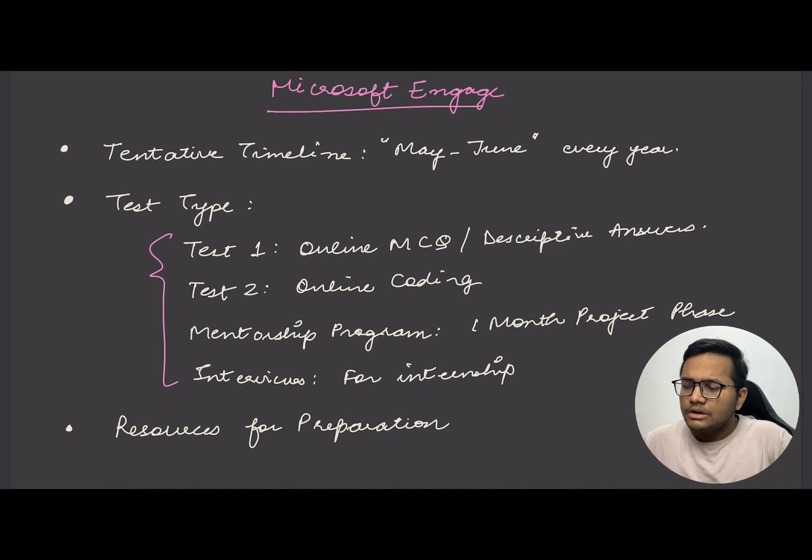Now we'll discuss the entire process in detail. The tentative timeline for Microsoft Engage is May or June every year. There are four stages: first is Test 1, an online MCQ test or descriptive answers. Last to last year the pattern was MCQs; last year it changed to descriptive answers. Then there's an online coding challenge with coding problems.